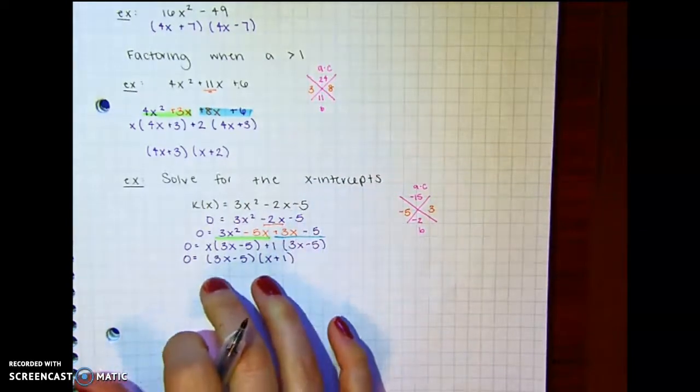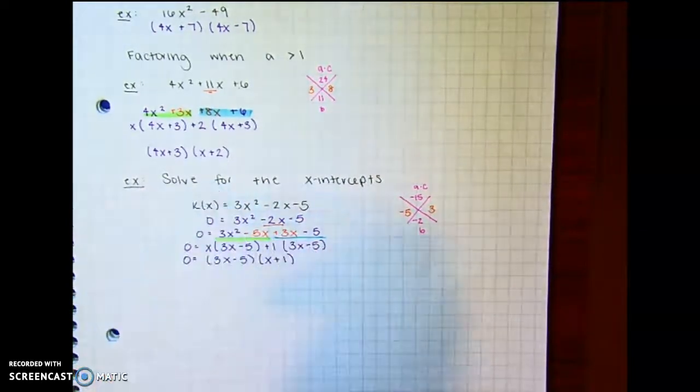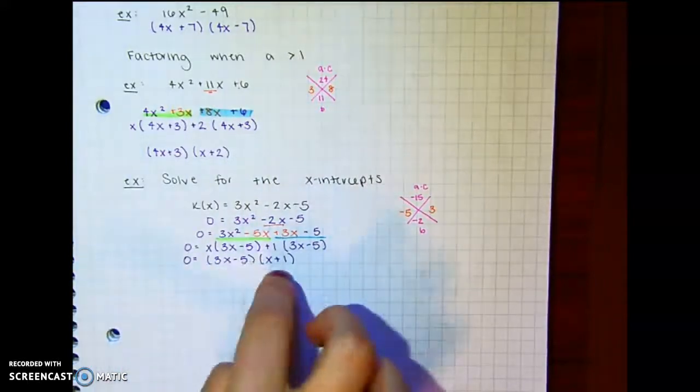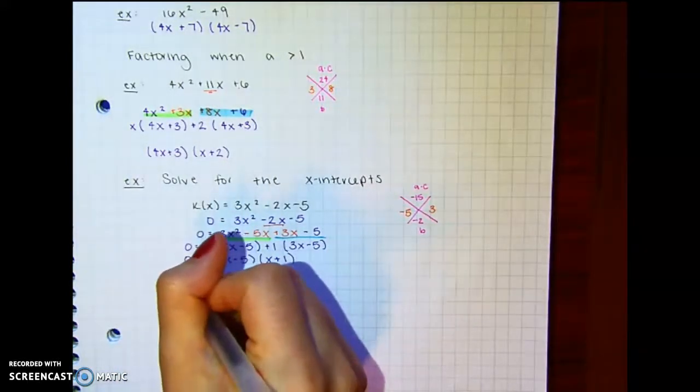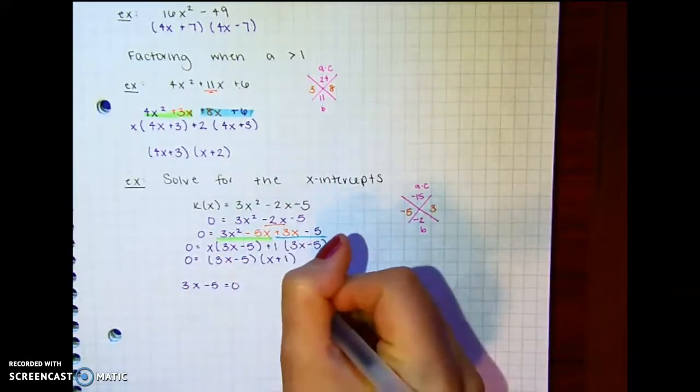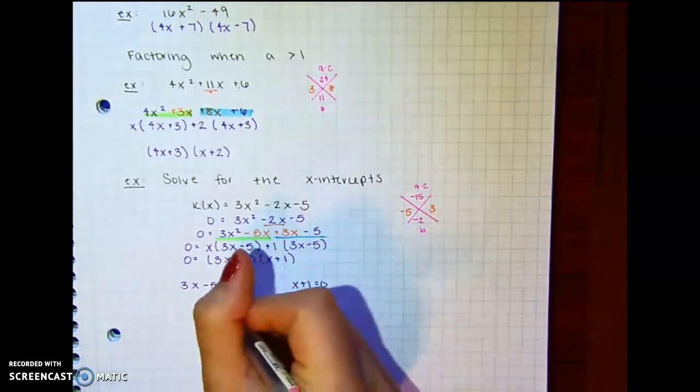And we're left with x plus 1. So that's the factor part. But now we're solving. So we need to use the 0 product property. So we set each product equal to 0. So we have 3x minus 5 equals 0. x plus 1 equals 0. And be careful here, right?